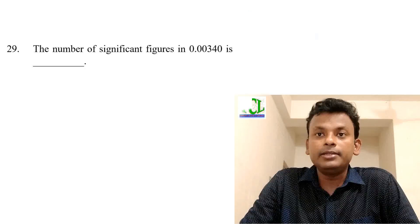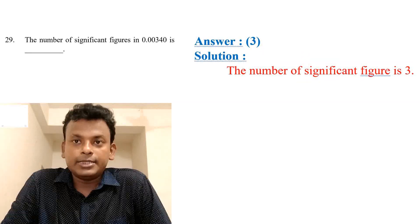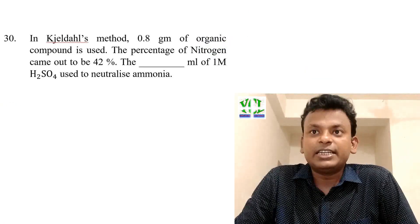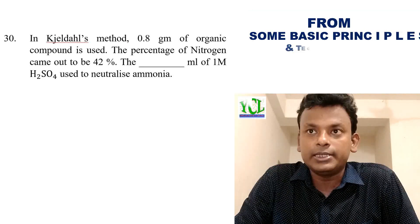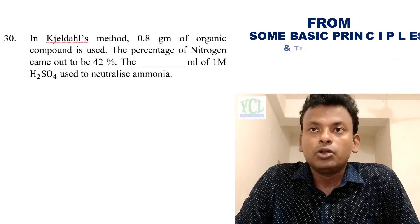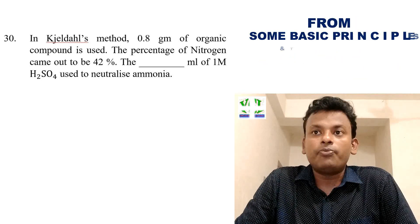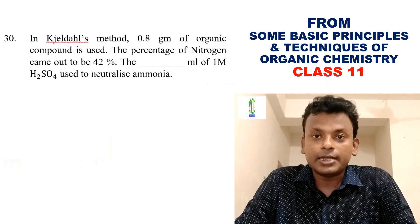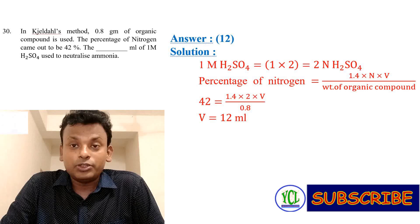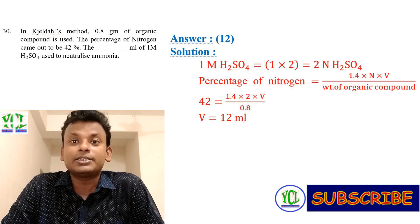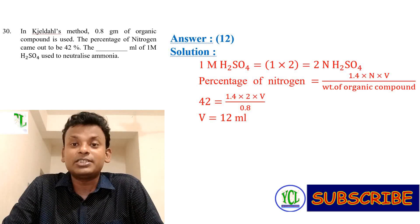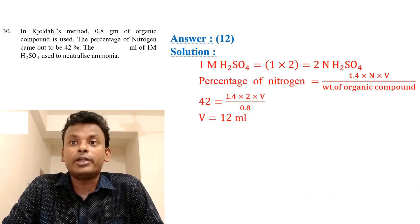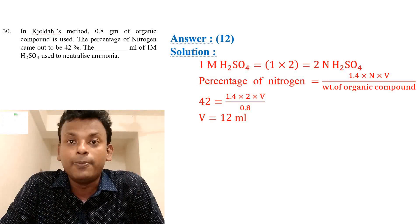Question 29: Number of significant figures in 0.00340 is 3. Question 30: In Dumas method, 0.8 g of organic compound gives 42% nitrogen. Find the volume of 1 M H2SO4 used for neutralization of ammonia. 1 M H2SO4 = 2 N H2SO4 (basicity 2). Using % N = 1.4 × N × V / weight of compound, putting all values gives V = 12 mL.